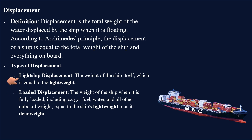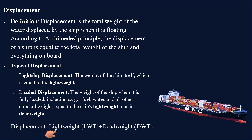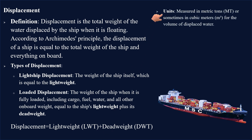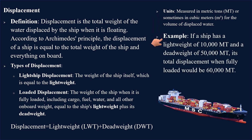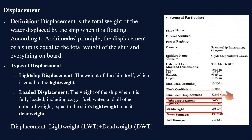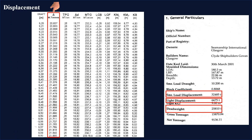Light ship displacement is the weight of the ship itself, which is equal to the lightweight. Loaded displacement is the weight of the ship when fully loaded, including cargo, fuel, water, and all other on-board weight, which equals the ship's lightweight plus its dead weight. Displacement is measured in metric tons or in cubic meters for the volume of displaced water. For example, with a lightweight of 10,000 metric tons and a dead weight of 50,000 metric tons, the total displacement when fully loaded would be 60,000 metric tons. The ship's loaded displacement can be found in the general particulars, and the displacement for her current condition can be determined using the hydrostatic tables, also available in the stability booklet.